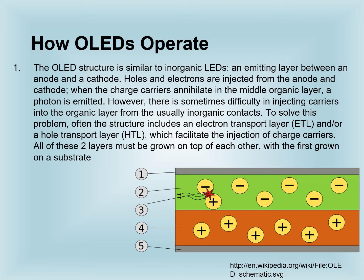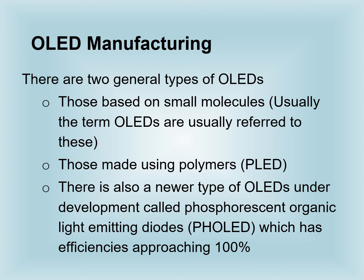All of these layers must be grown on top of each other, with the first grown on a substrate. There are two general types of OLEDs. Those which are made of very small molecules are usually referred to as OLEDs. But those which are made using polymers are referred to as PLEDs. There is also a new type of OLED under development, which is known as Phosphorescent Organic Light Emitting Diode (pH OLED), which has efficiencies approaching 100%.